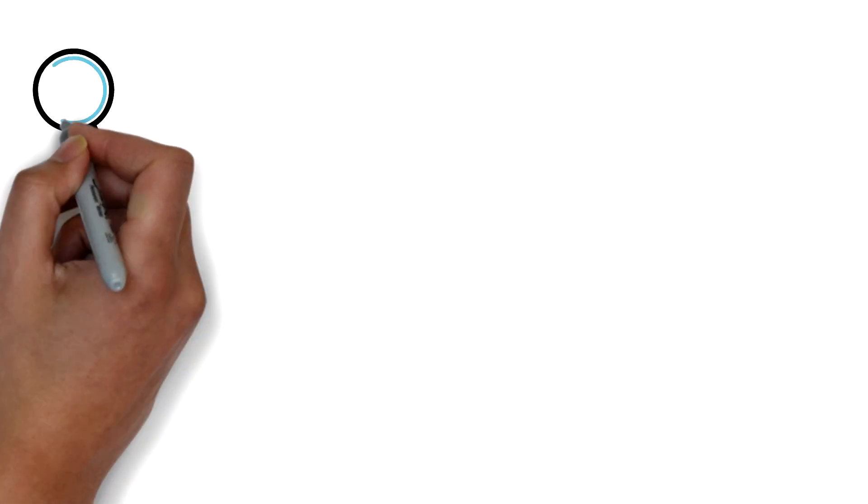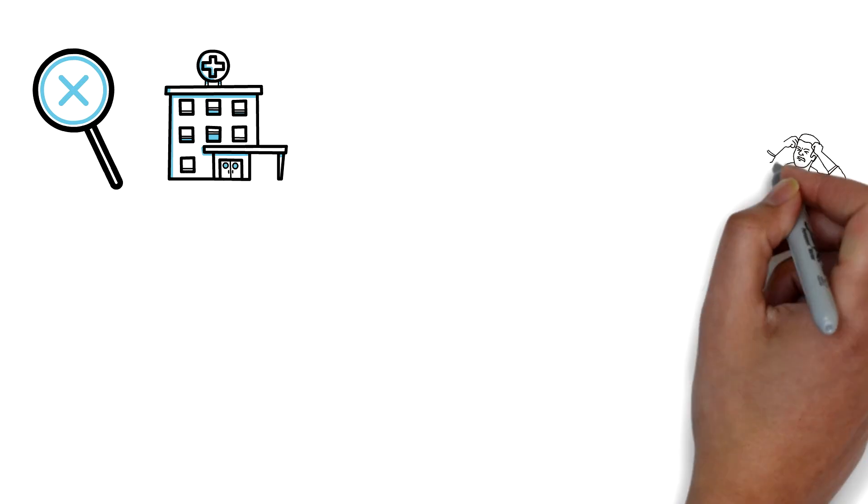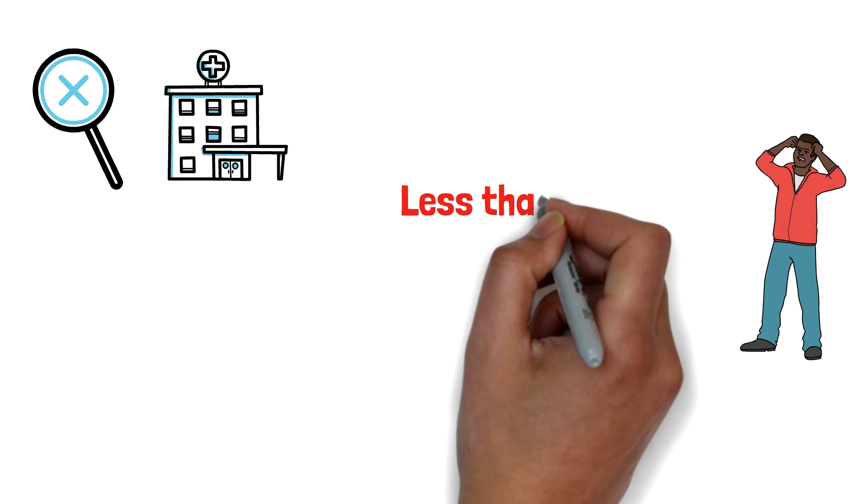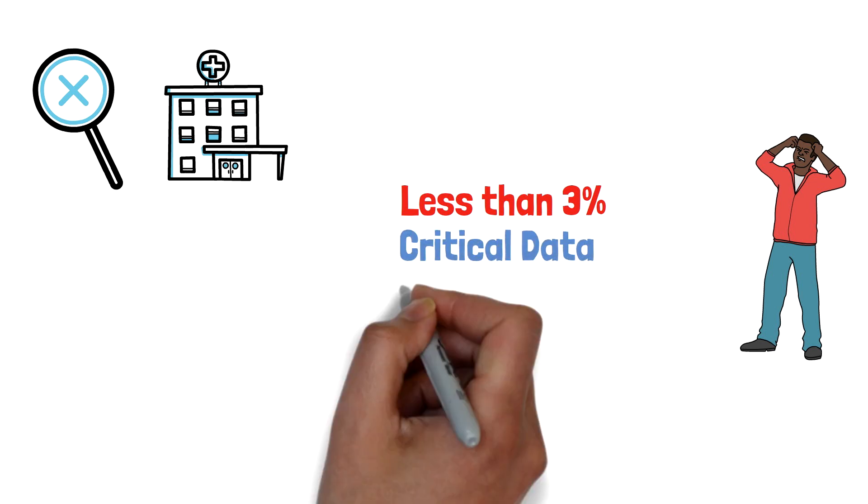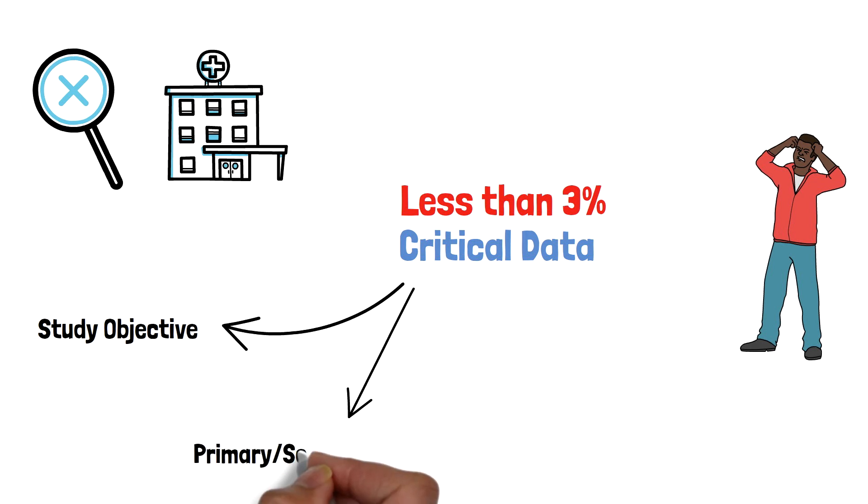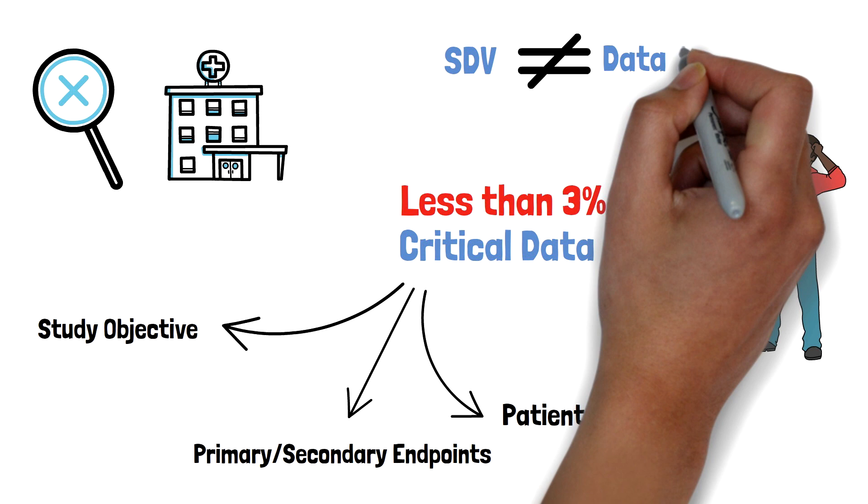Any mismatch found during this process would then need to be corrected by the site. What really frustrated them about this process was that in the end, less than three percent of corrected data affected critical data. These are data that are extremely important to validate the overall objective of the clinical trial and protect the patient's safety. It just seemed that their efforts conducting source data verification had in fact very little impact on the data quality.